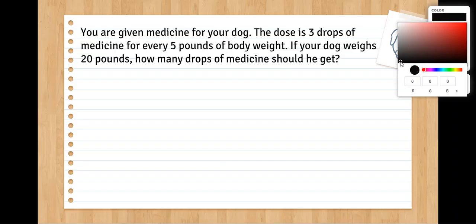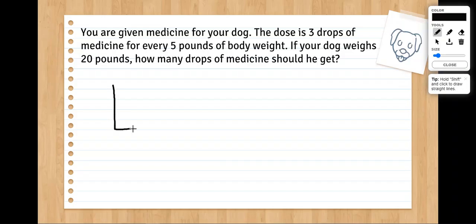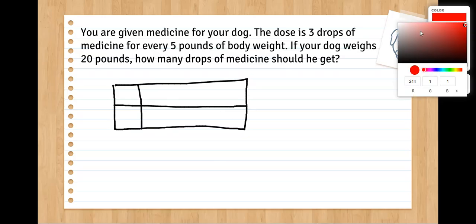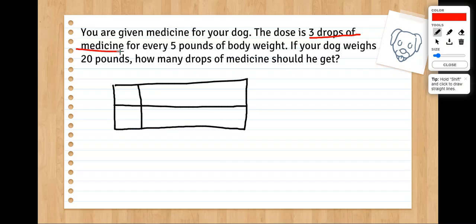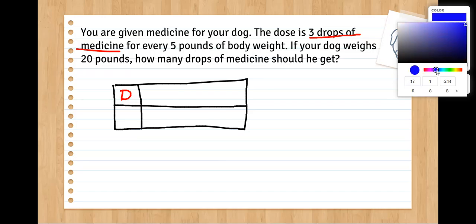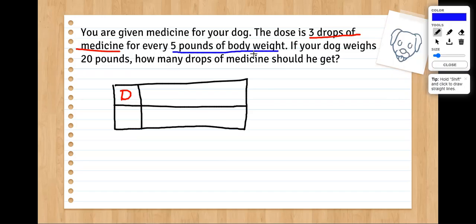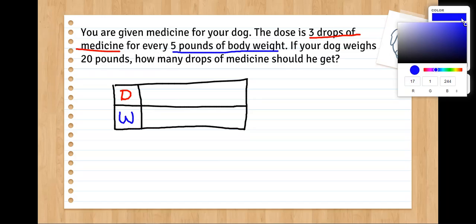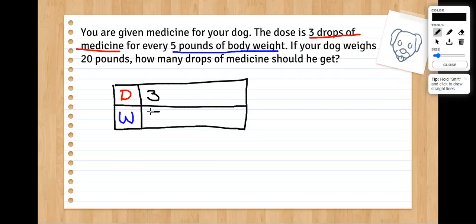You could have solved this using either method. I'm going to show you using a ratio table. So I'm going to create my table. And the first thing I always do is put in my labels. So I'm comparing how much medicine, the number of drops of medicine I need based on how much our dog weighs, five pounds of body weight. Your labels could be different as long as you understand which numbers go where. Then I'm going to start with our original ratio. I need three drops for every five pounds of our dog. So three drops if our dog is five pounds.